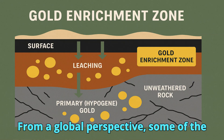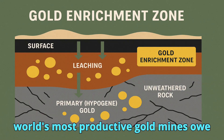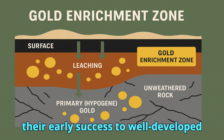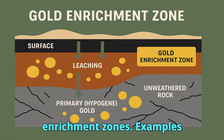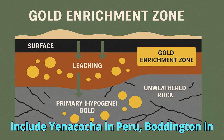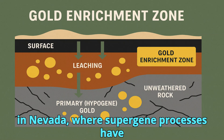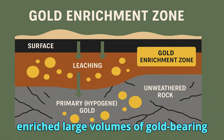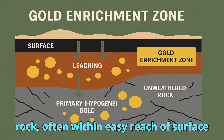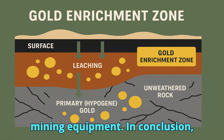From a global perspective, some of the world's most productive gold mines owe their early success to well-developed enrichment zones. Examples include Yanacocha in Peru, Boddington in Australia, and parts of the Carlin Trend in Nevada, where supergene processes have enriched large volumes of gold-bearing rock, often within easy reach of surface mining equipment.